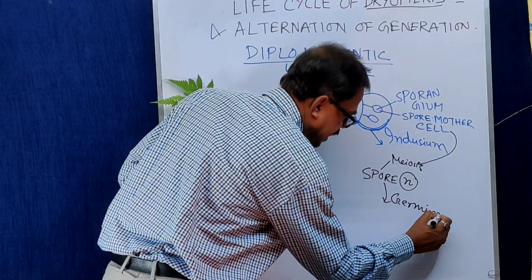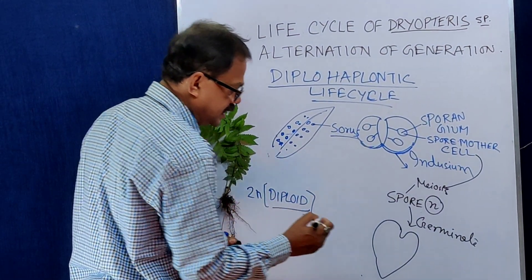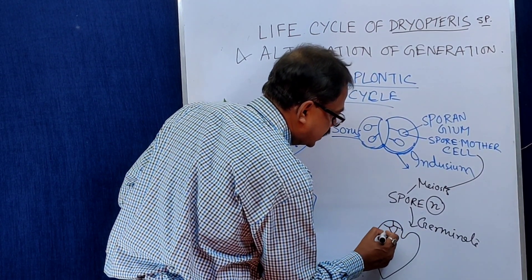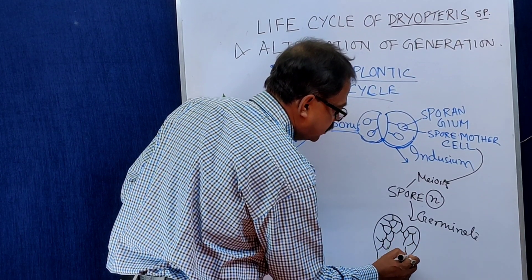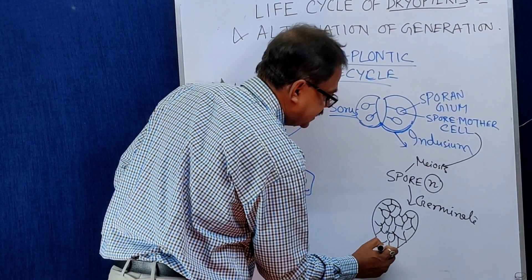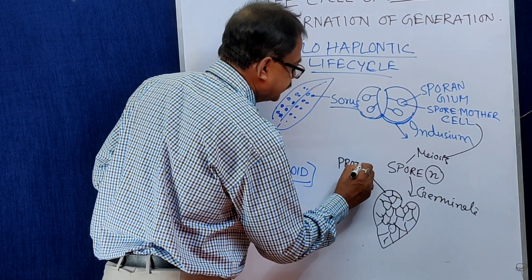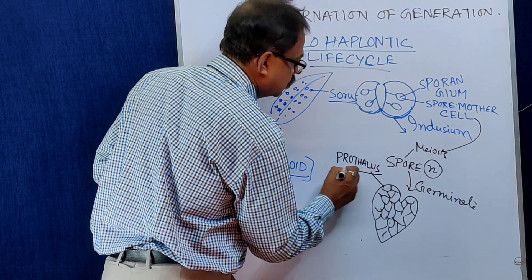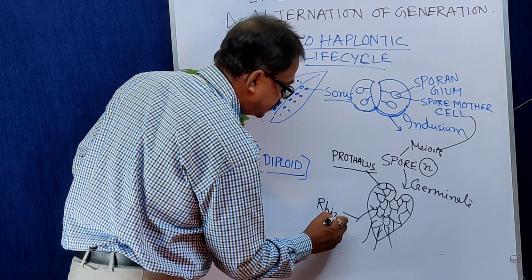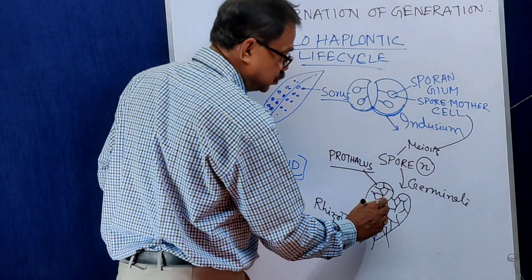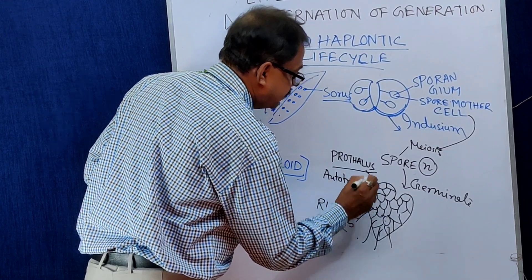These spores germinate and produce a heart-shaped, multicellular, photosynthetic structure called the prothallus. It is a very minute structure. Rhizoids are present on the prothallus. It is photosynthetic, meaning it is autotrophic — so it can prepare its own food.